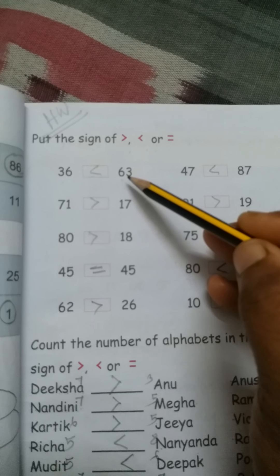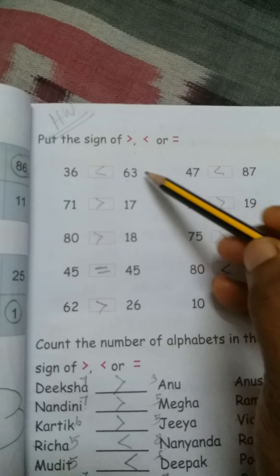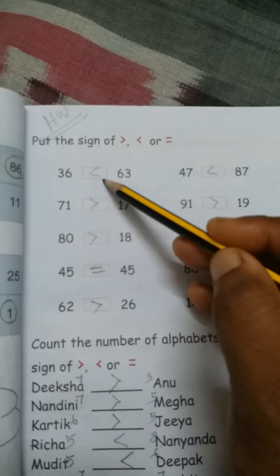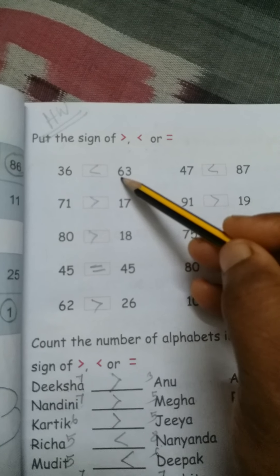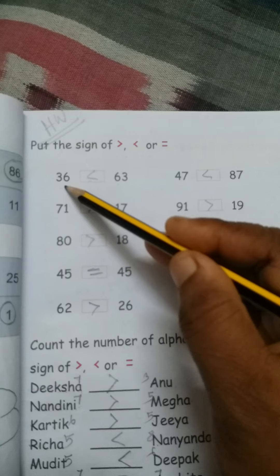So which number is big number, 63? So, right here, this sign here means 63 is greater than 36, understood?